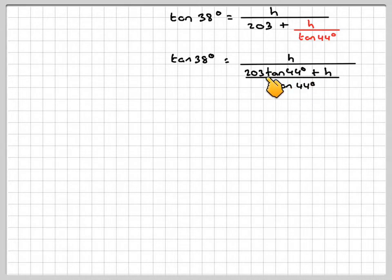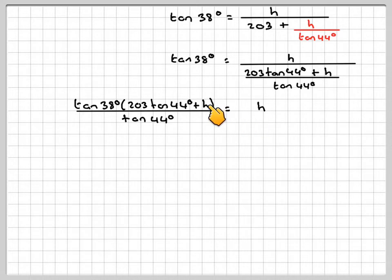Now I'm going to take all of this denominator and take it up here by multiplying. So I've got tan 38 times 203 tan 44 plus h over tan 44 is just equal to h. Now I've got h on its own, but unfortunately I've got all of h here, so I've really got to get these two h's collected together. So the only thing I can do is expand the bracket.